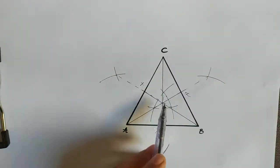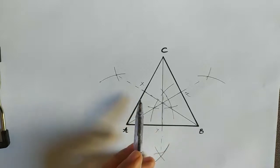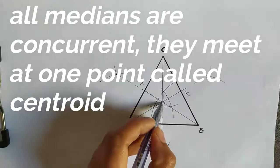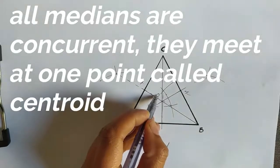Draw the medians, and these three medians meet at one point, so we give it a name. That means all the medians are concurrent.